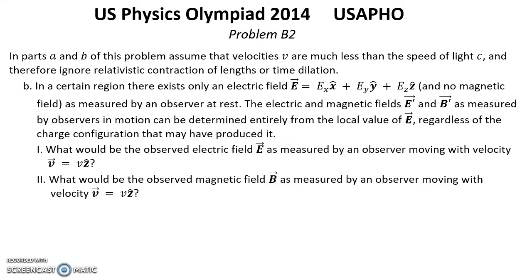Question 1: What would be the observed electric field E as measured by an observer moving with velocity V in the Z direction? Question 2: What would be the observed magnetic field B as measured by an observer moving with velocity V in the Z direction?